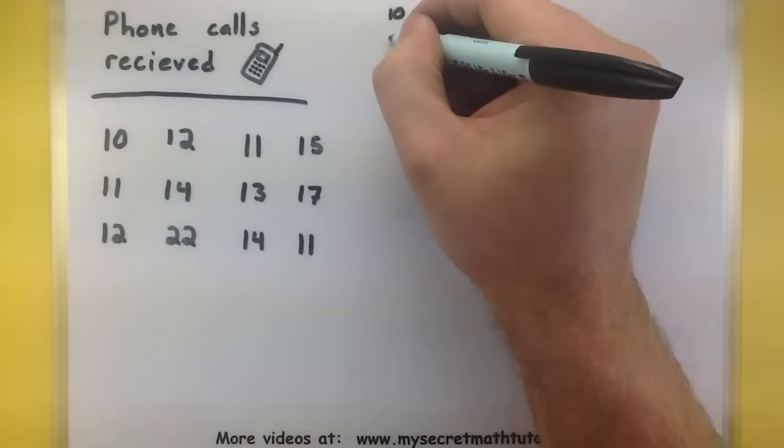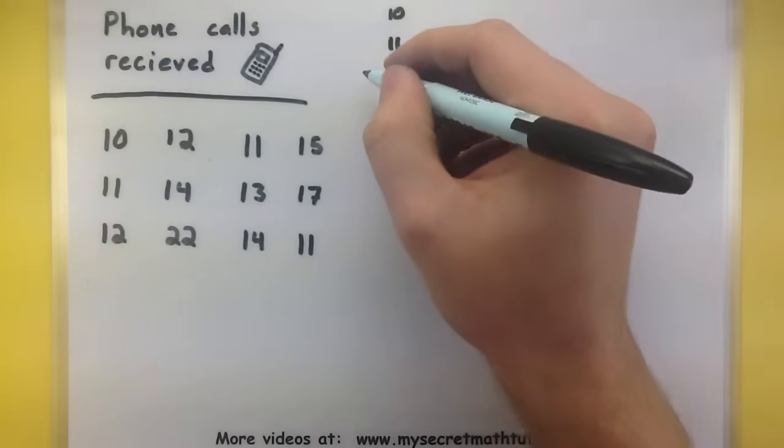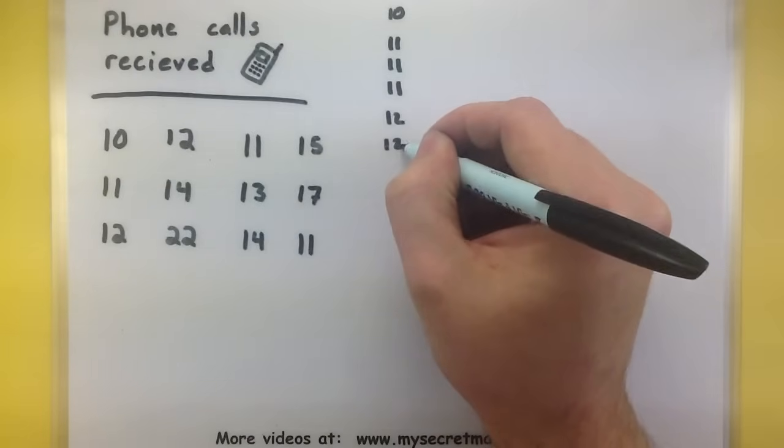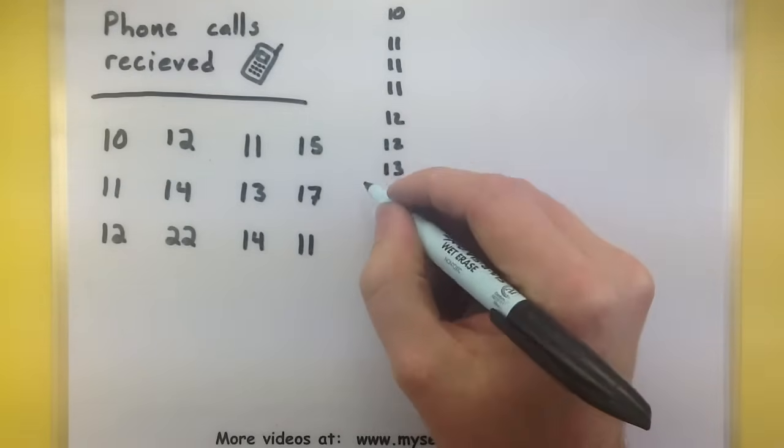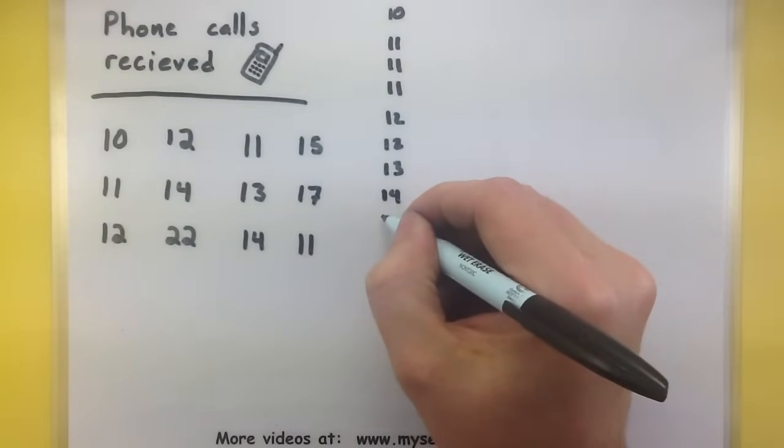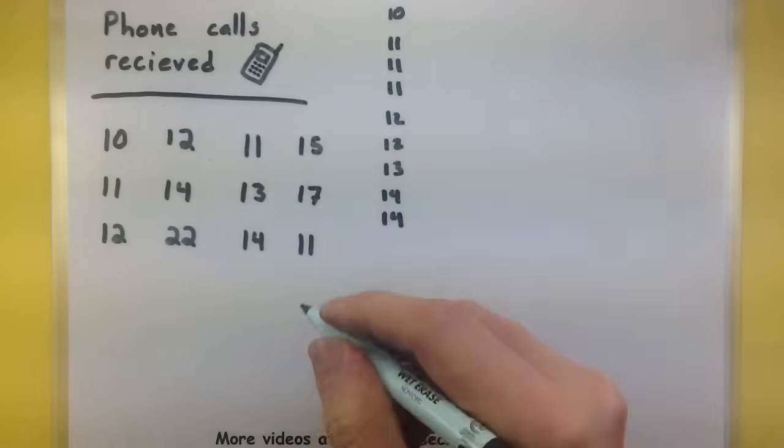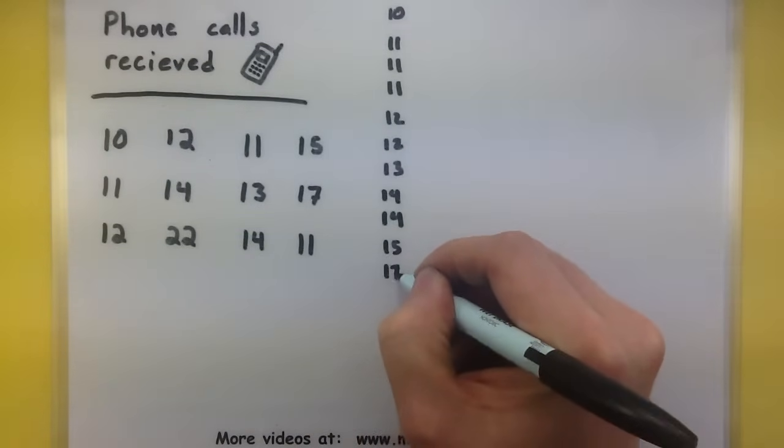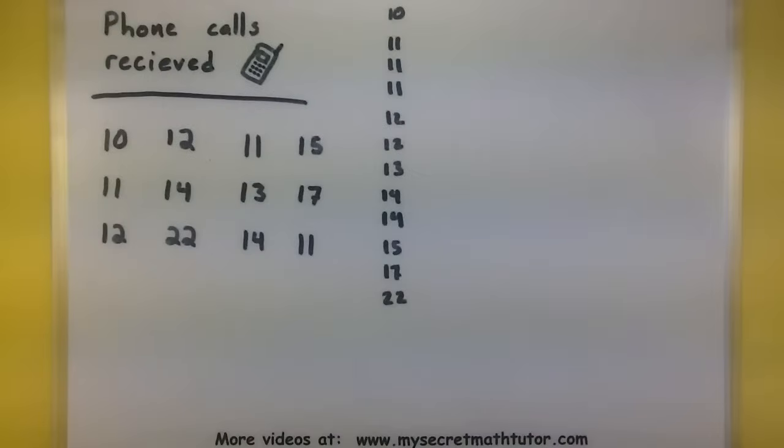10, 11, 11, 11, 12, 12, 13, 14, 15, 17, 20, 22. Alright, so you can see that when I list out my data like this, 22 does look like a pretty high value and 10 looks like a fairly low value.